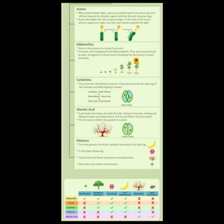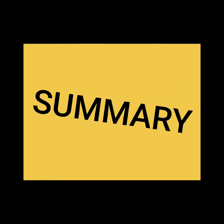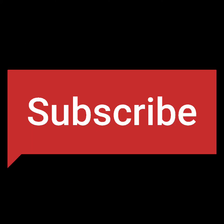So in summary, we have five main plant hormones: auxin, gibberellins, cytokinin, abscisic acid, and ethylene. Three are growth promoters and two are growth inhibitors. Remember the five tropic movements: phototropism, geotropism, hydrotropism, chemotropism, and thigmotropism. These are all very important from an exam point of view. I hope you all understood this lecture — just rewind the video and watch it once more if you have any doubt. Don't forget to like, share, and subscribe!